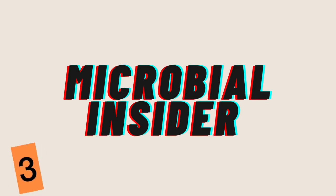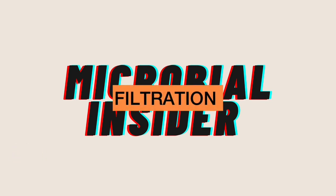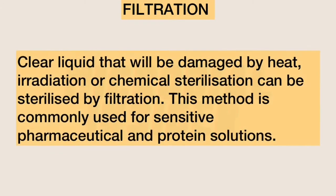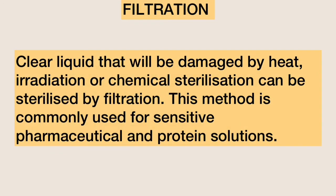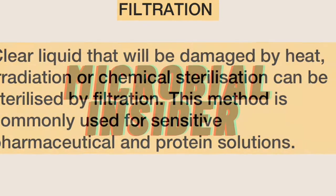The third physical method used to control microbial growth is filtration. Clear liquids that will be damaged by heat, irradiation, or chemical sterilization can be sterilized by filtration. This method is commonly used for sensitive pharmaceutical and protein solutions.